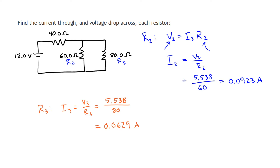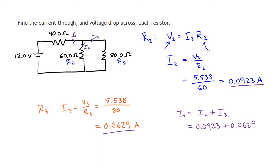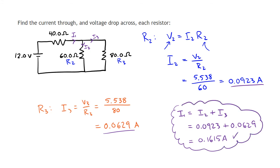This is always a great point to do a quick check. By Kirchhoff's junction rule, the current that goes through the 40 ohm resistor and then splits down each path through R2 or R3 must satisfy: the current into the junction equals the total current out. So I1 must equal I2 plus I3. Adding I2 and I3 together gives 0.1615 amps, which matches our original I1 solved from the total resistance. This confirms our answers are correct.